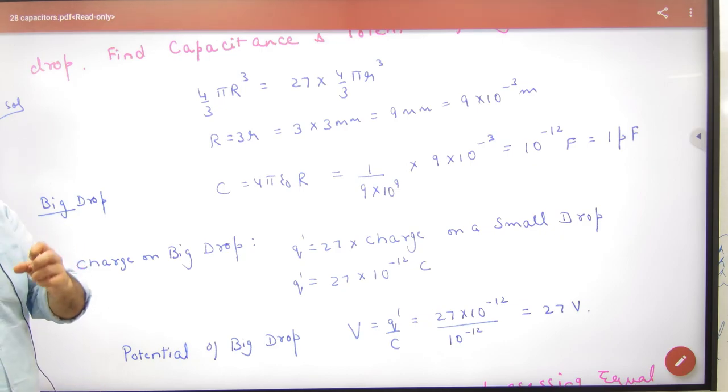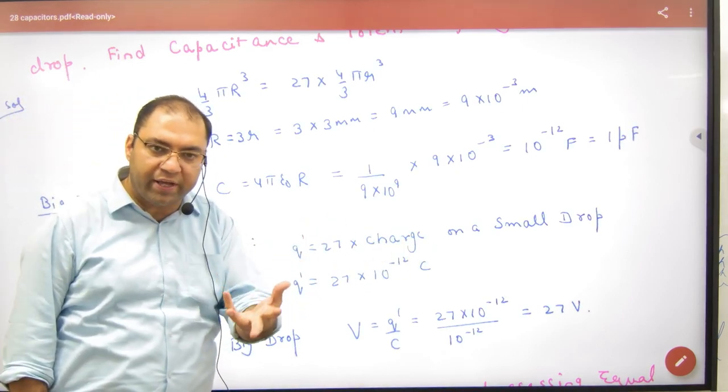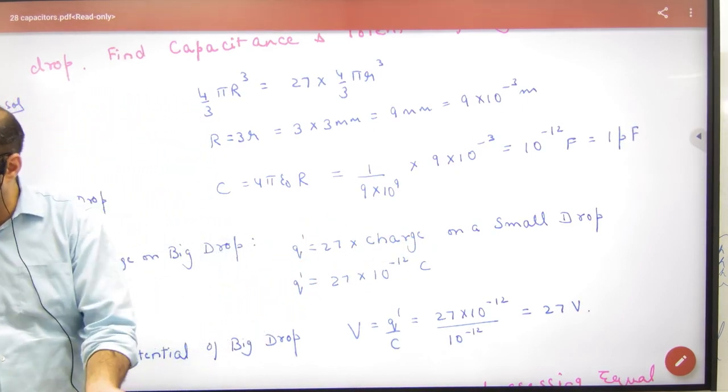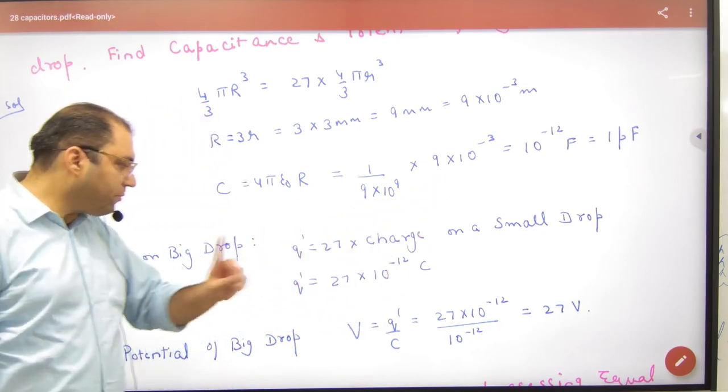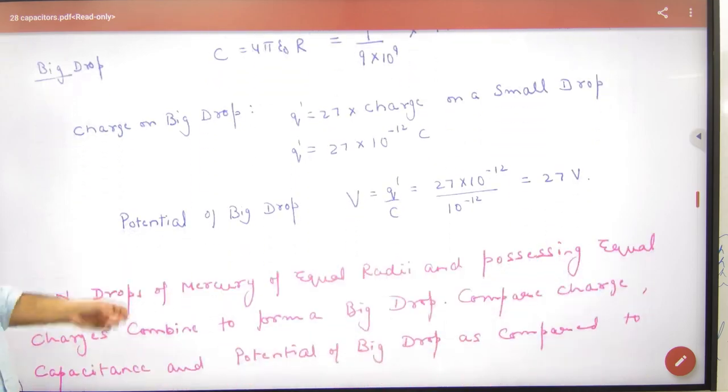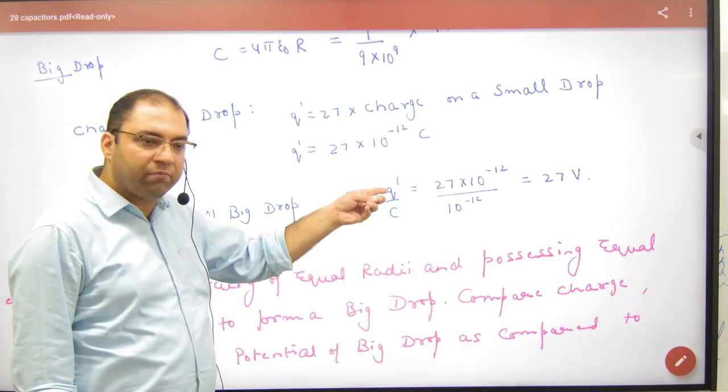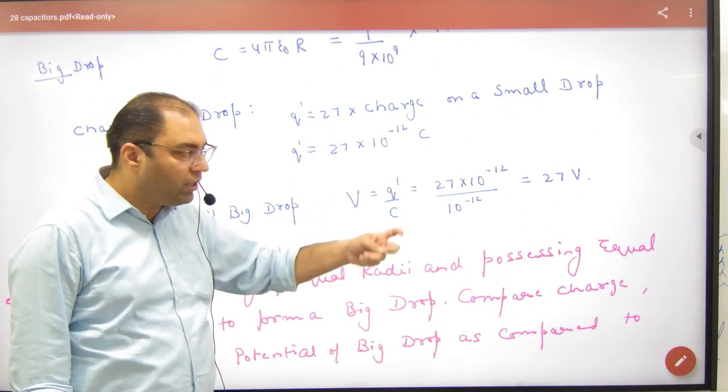27 small drops combine, because when drops combine charge will add. 27 into charge of single drop we know. So this is a big drop charge. Big drop charge by big drop capacitance.